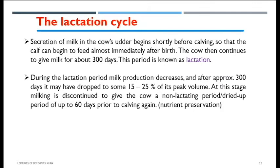One to two months after calving, the cow is serviced again during the next heat cycle. During the lactation period, if we consider peak production as 100 percent, after approximately 300 days of milk production, this decreases down to 75 to 80 percent of the peak volume.